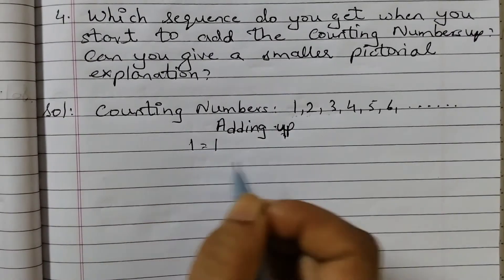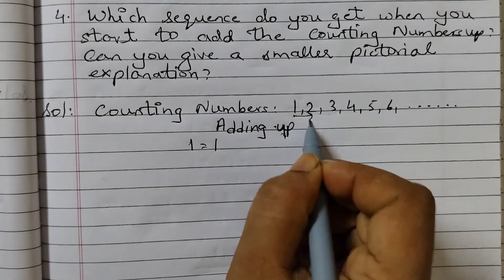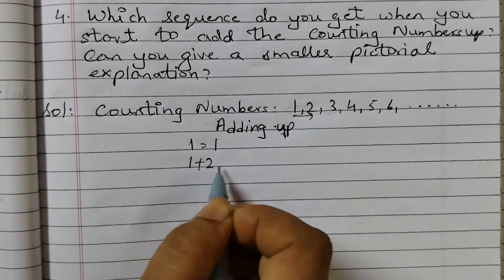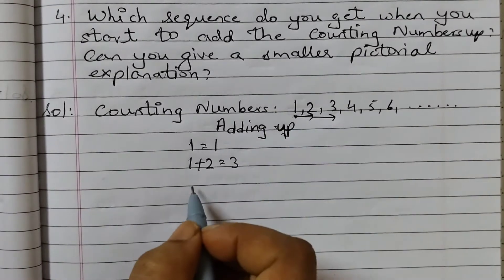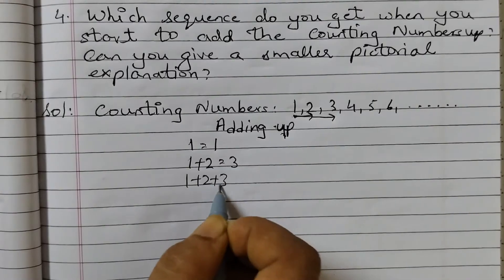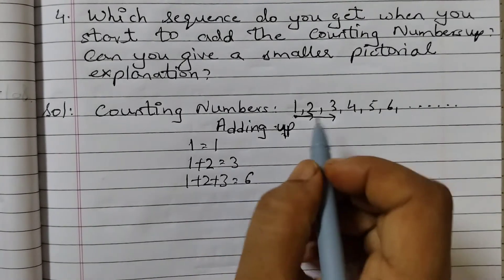1 is equal to 1. Then 1 and then next 2, so 1 plus 2 is 3. 1 plus 2 plus 3, go till 3, that is equal to 6.